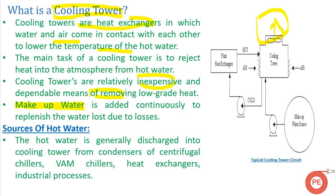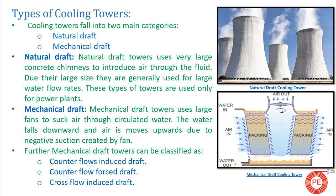Cooling towers are used in most plants. Water from processes, condensers of chillers, heat exchangers, and industrial processes — all that hot water which cannot be released openly — is sent to the cooling tower. From the cooling tower, the cooled water is sent back to the process area, and this cycle continues again and again.